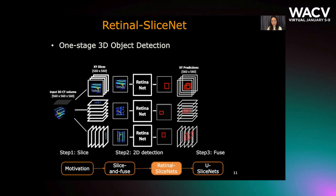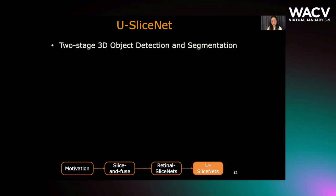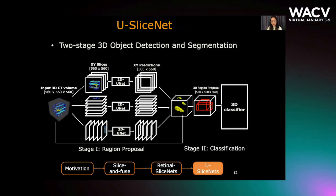The second application is U-SliceNet. It follows a two-stage paradigm, which first generates region proposals and then refines them. In the first stage, we use slice-and-fuse to predict 3D voxel labeling, which gives us the semantic segmentation mask. We further use the mask to generate region proposals. In the second stage, we use an accurate 3D classifier to remove negative proposals.